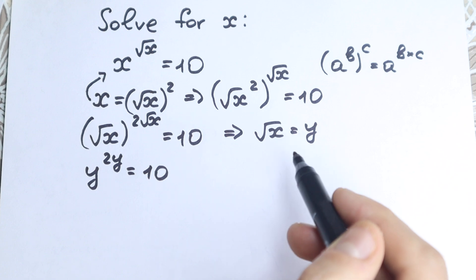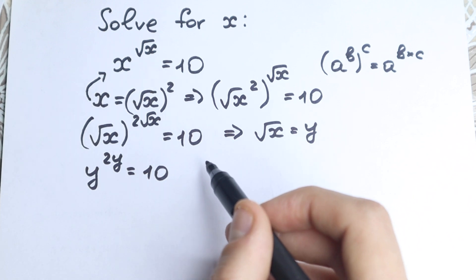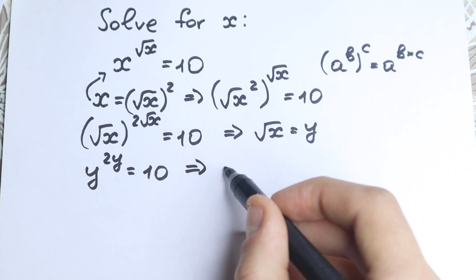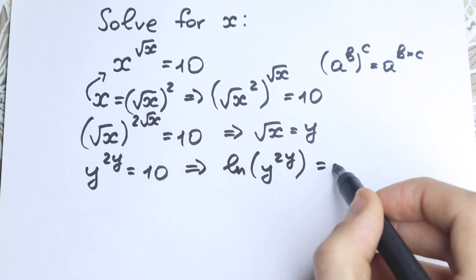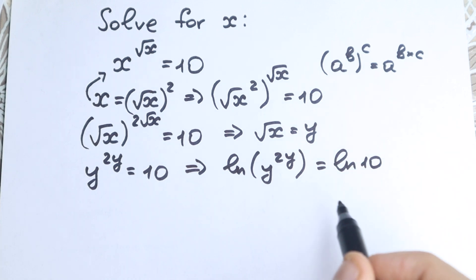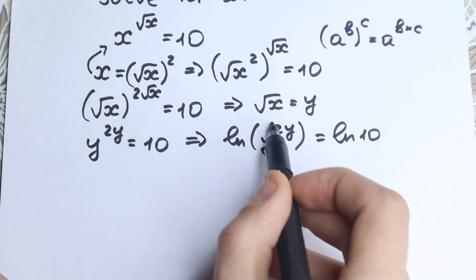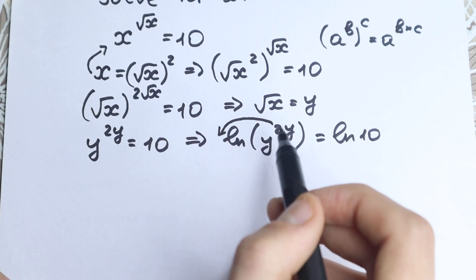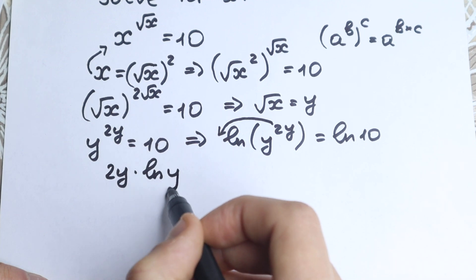To handle this power, we apply the natural log on both sides. So we have ln(y^(2y)) = ln(10). Using the log power property, we bring the exponent down: 2y · ln(y) = ln(10).